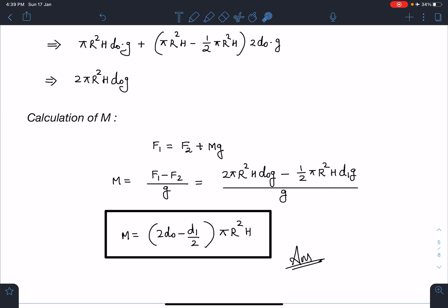Now I can write this M as F1 minus F2 divided by g. When I substitute these values here, I can substitute the F1 value I have calculated and F2 I have calculated, divided by g. When I simplify this, this is going to be the mass of this paraboloid vessel along with the tube: 2d0 minus d1 by 2 times pi R squared H. This is going to be the final answer for this question.